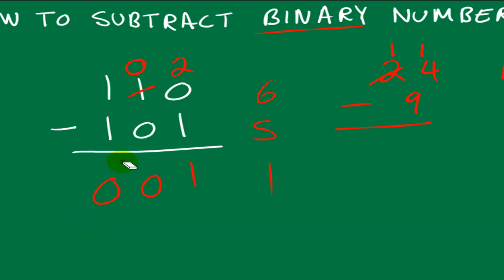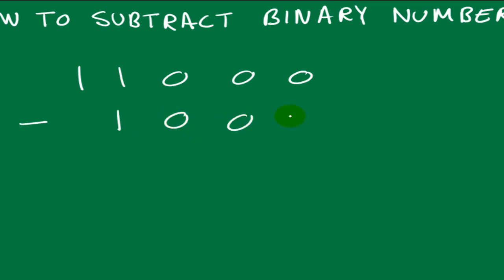So let's go ahead and look at a more complicated example. Let's say we have the number 24 in binary and we wanted to subtract a 9 from it.